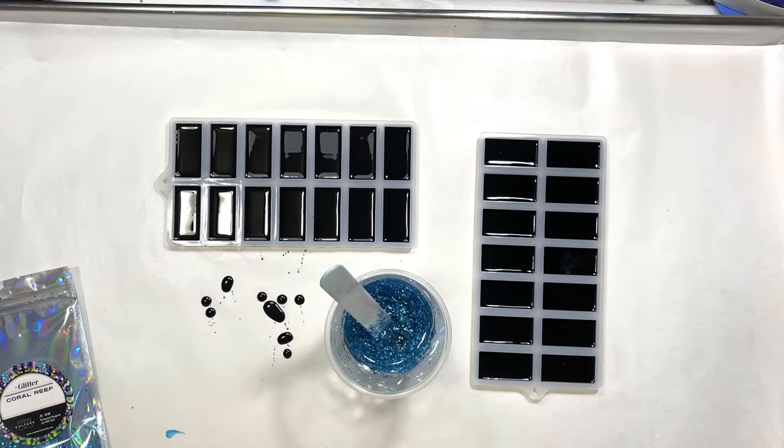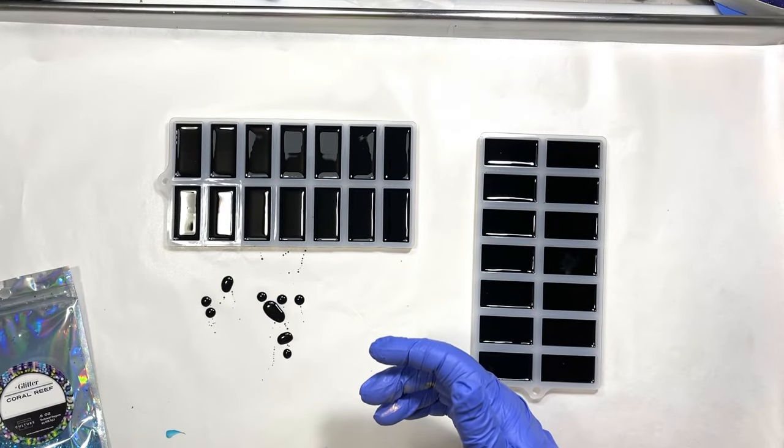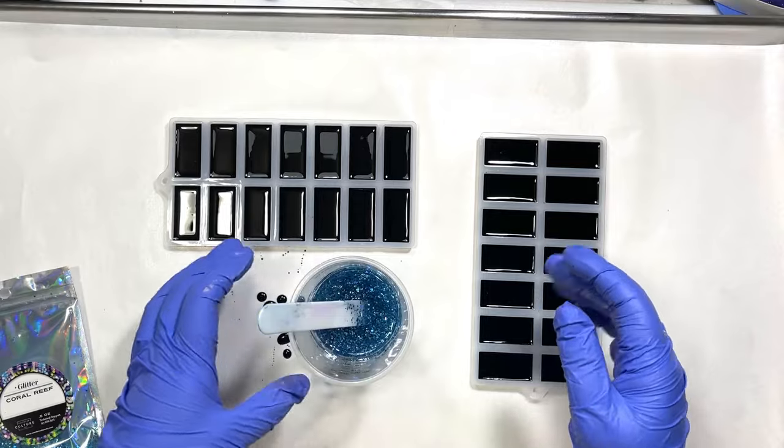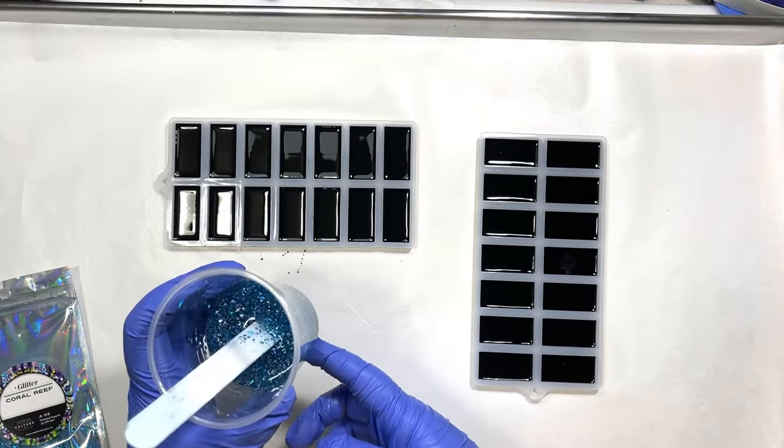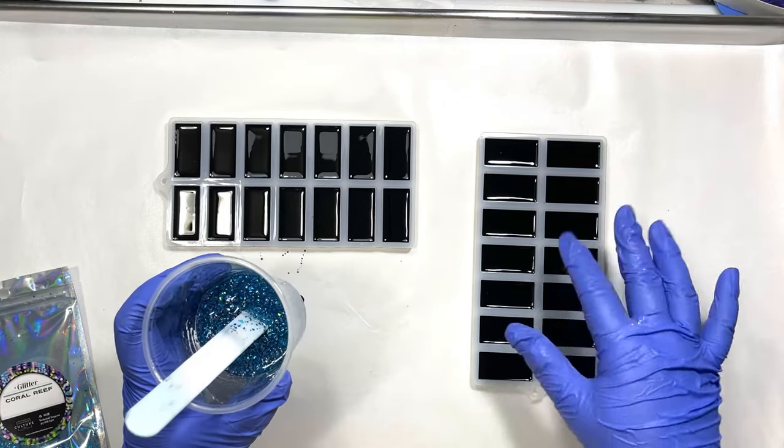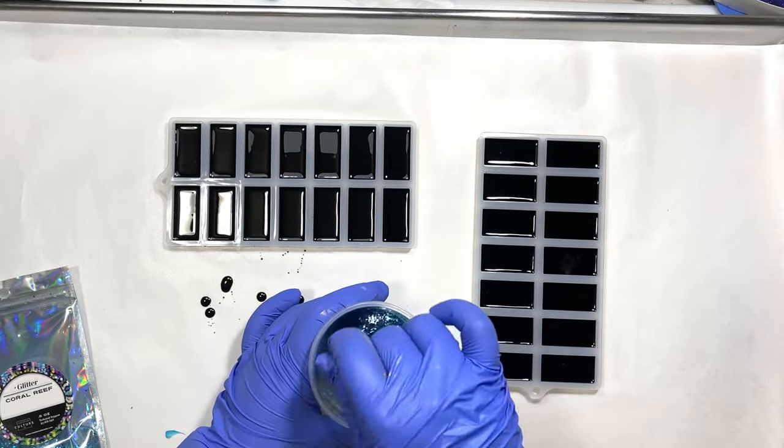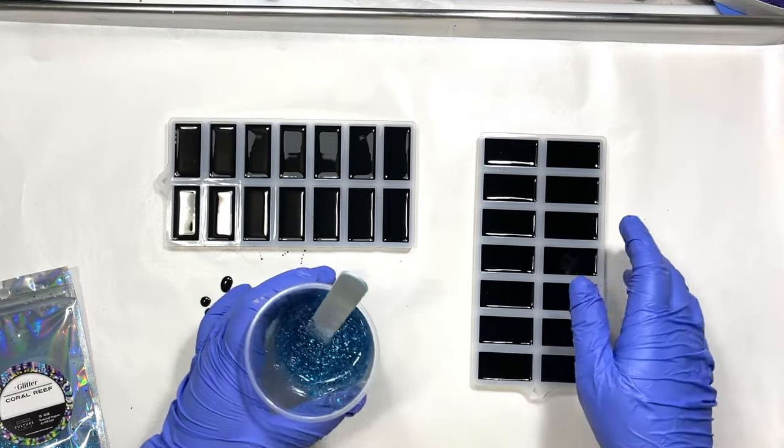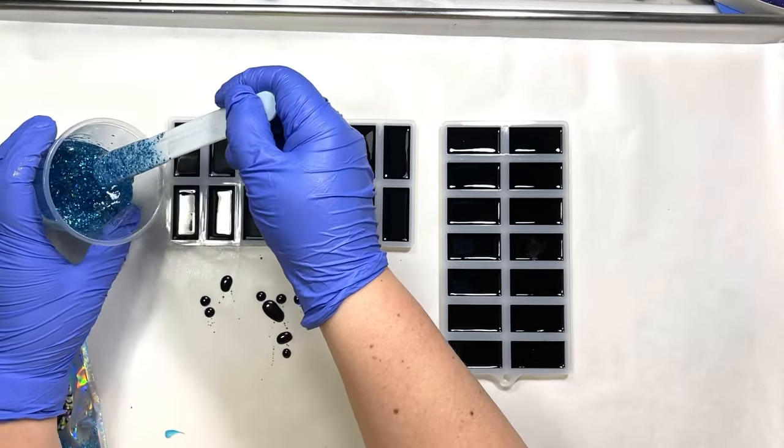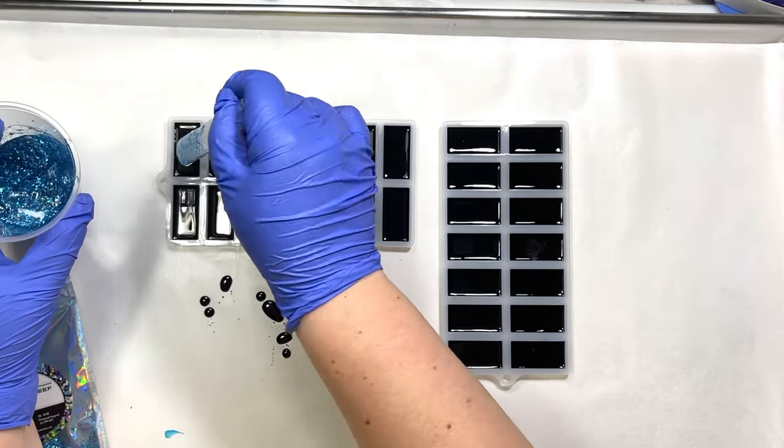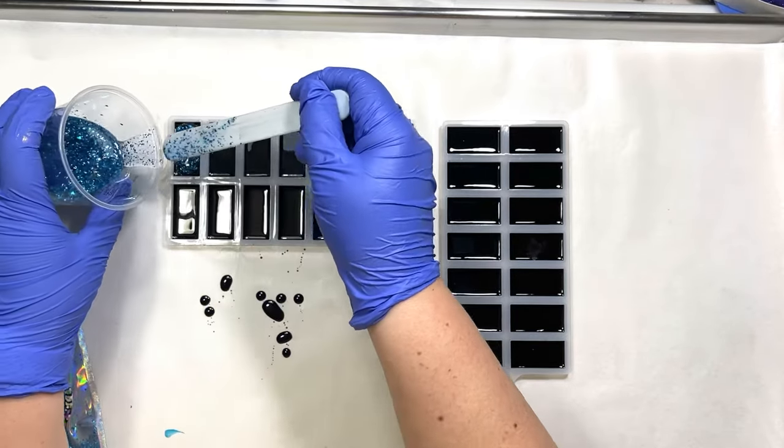Now, glitter tends to either sink or float depending what it's made out of. And because I have so many little cavities, I don't want to just pour, because what's going to happen is there's going to end up with more glitter on the bottom, so the glitter is not going to be evenly dispersed. So I'm going to have to stir it quite frequently to make sure that all these little cavities have the same amount of glitter in them. So I'm going to do the same thing I did when I did the black. I'm just going to put it in with the stick. So it takes longer, but I have a lot more control over it.